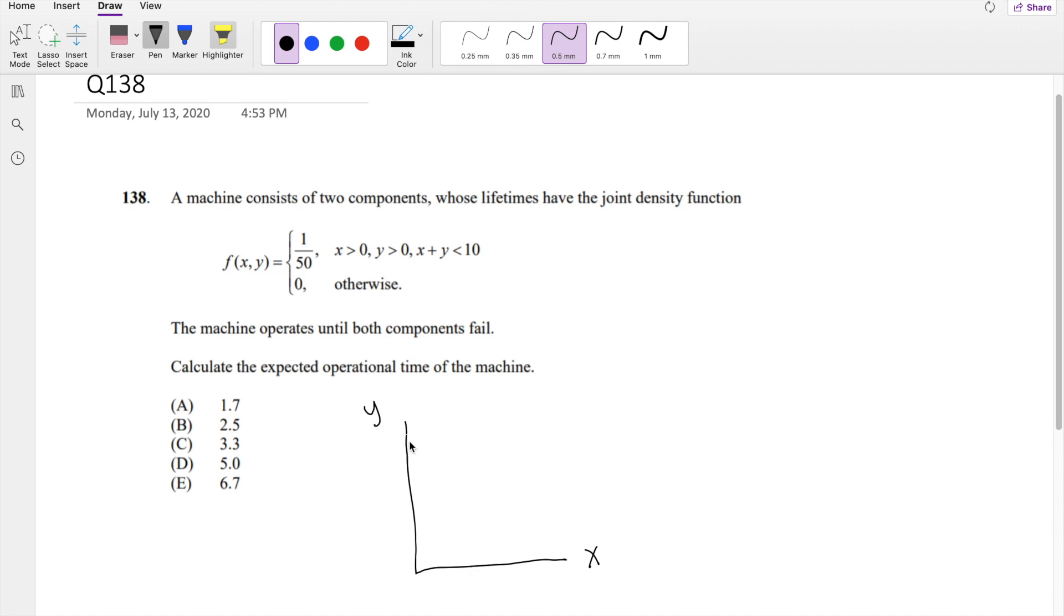This range here is x plus y is less than 10, so this is going to be this range here. And there's actually two possible expectations, as in like two possible maxes. So let's say this is like y equals x, because the expectation for this triangle here is different than this triangle here.